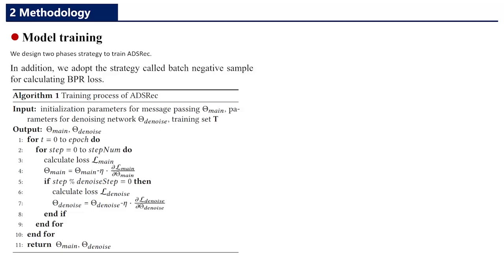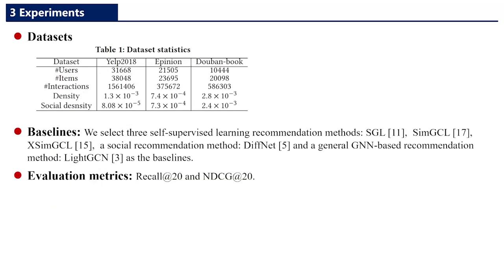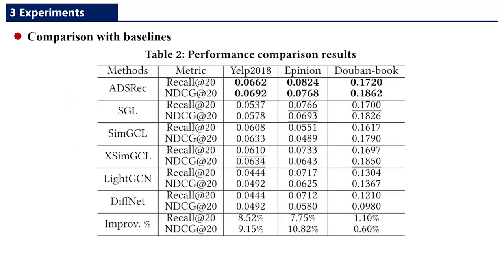For model training, we design a two-phase training strategy to train ADS-REC. In addition, we adopt a strategy called batch negative sampling. To calculate the BPR loss, we conduct related experiments on three benchmark datasets and the results illustrate the superiority of ADS-REC over state-of-the-art methods. And this is our result.